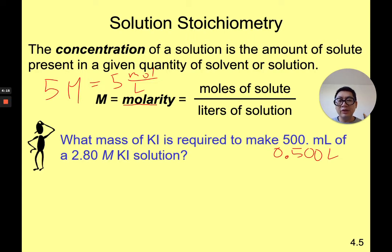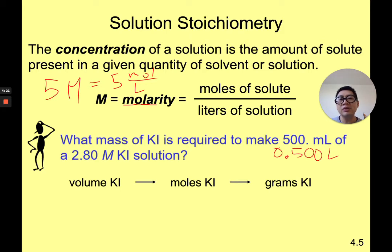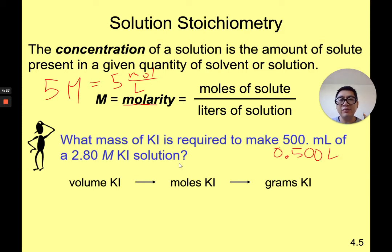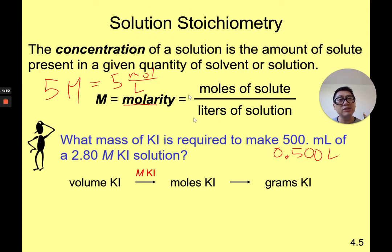I know the volume, so I can convert the volume to number of moles, and then moles to grams. That's what I'm going to do. Because I know there are 2.8 moles if I had a liter of the solution — 2.8 molar means 2.8 moles per liter. I was given 0.5 liters, so I'll convert volume into moles using the molarity, then go from moles to grams by multiplying by the molar mass. This is solution stoichiometry.